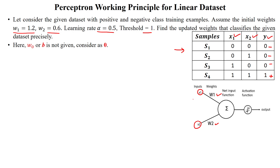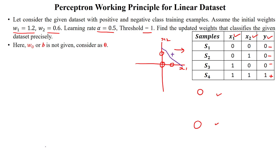To check whether the dataset is linearly separable, we draw a plot of x1 and x2 and plot the data samples. The point (0,0) is the negative class, (0,1) is negative class, (1,0) is also negative class, and (1,1) is the positive class. We check if it is linearly separable using a linear decision boundary — yes, it is linearly separable. So we can proceed with the activation function using the linear sum.